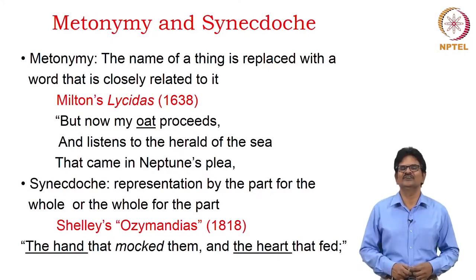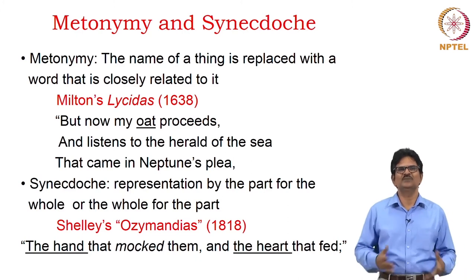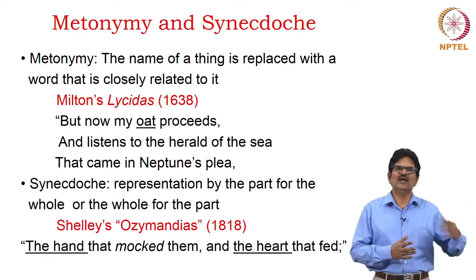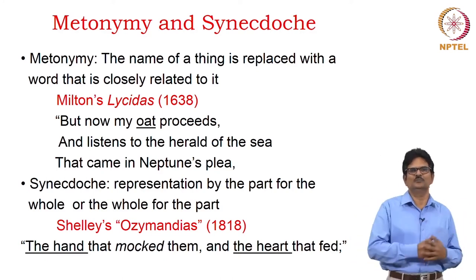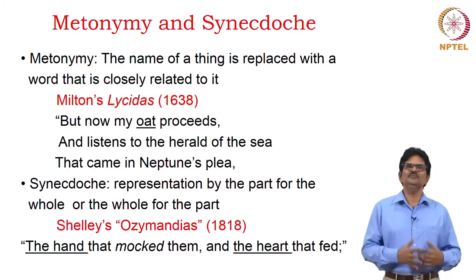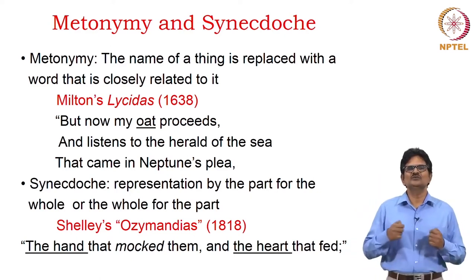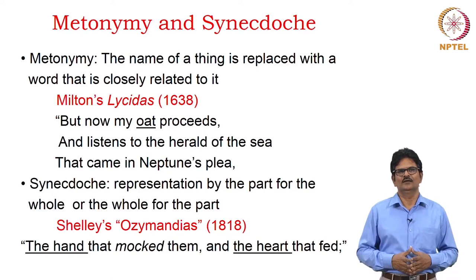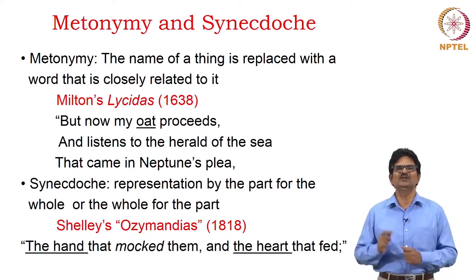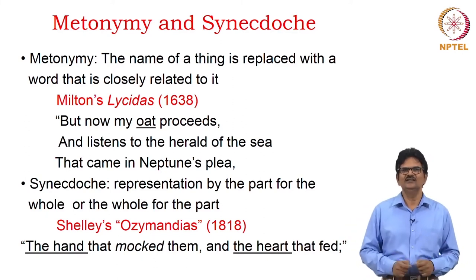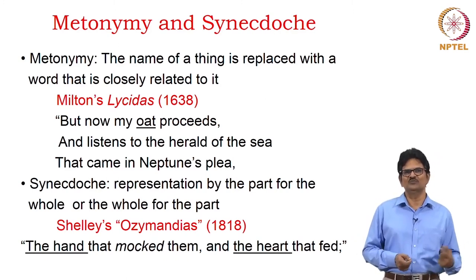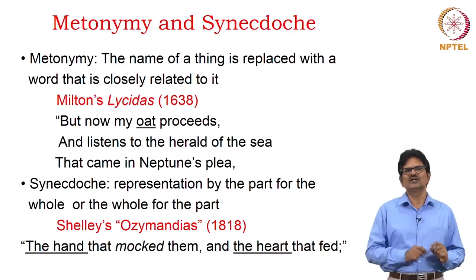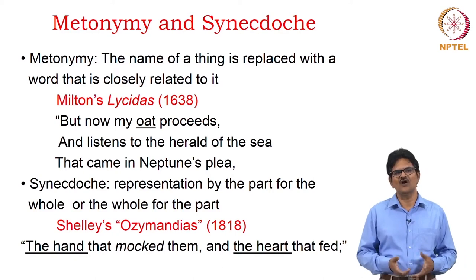We come to another pair of figures of thought commonly grouped together: metonymy and synecdoche. These figures are used to refer to something by association, by referring to part for whole or whole for part. Metonymy is the name of a thing that is replaced with a word which is closely related to it. For example, in Milton's 'Lycidas': 'But now my oat proceeds and listens to the herald of the sea that came in Neptune's plea.' The word 'oat' is used metonymically — it refers to the tree from which an instrument is made for singing, and so metonymically the word 'oat' stands for the poem or song that the poet sings.